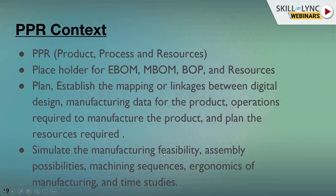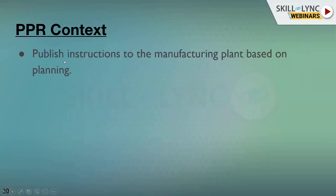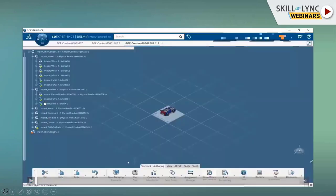PPR context also helps you simulate manufacturability — for example, whether it is possible to perform an activity at a particular place using a particular tool. You simulate the sequence of machining and check ergonomics: can a person reach that point with their hand, is that point visible? These ergonomics studies are part of manufacturing planning. Finally, it enables time studies and publishing all the planning, simulation, and process optimization to the manufacturing plant.